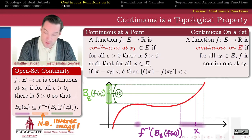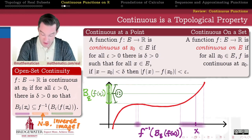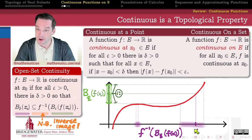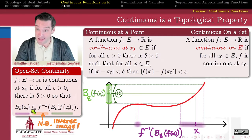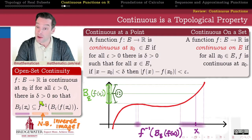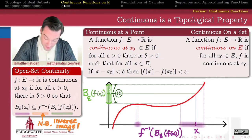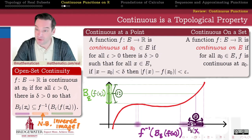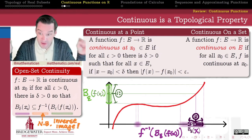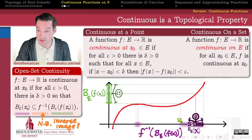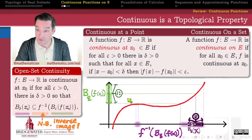What do we need to be true in order to conclude that f is continuous at x₀? We just need to be able to find a delta ball — there must exist a delta greater than zero — such that the delta ball around x₀ is entirely contained within this inverse image. I should be able to stand at the point x₀, stretch out my arms a delta distance, and have everything I touch be a part of the inverse image of the epsilon ball.